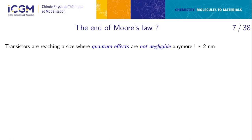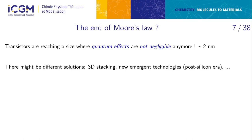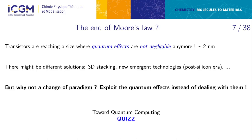We are reaching the end of Moore's law because the transistors we manufacture now reach about two nanometers — the size at which we can no longer neglect quantum effects. There may be solutions to continue Moore's law until perhaps 2027 through 3D stacking and new technologies. But another approach is to use quantum effects constructively, leveraging quantum mechanics to make quantum computers instead.